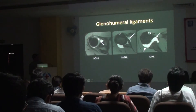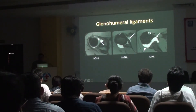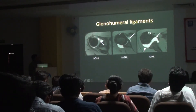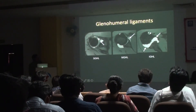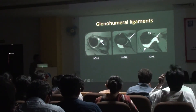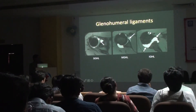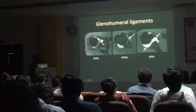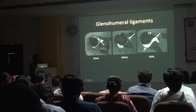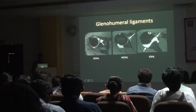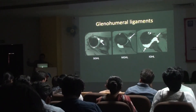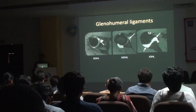The glenohumeral ligaments are beautifully appreciated on arthrogram — you might struggle to see them on non-arthrographic images. Look at the coracoid process: whatever structure parallels the coracoid process is your SGHL (superior glenohumeral ligament). Anything paralleling the subscapularis is your MGHL (middle glenohumeral ligament). And inferiorly, you have the posterior band and anterior band of the IGHL (inferior glenohumeral ligament).